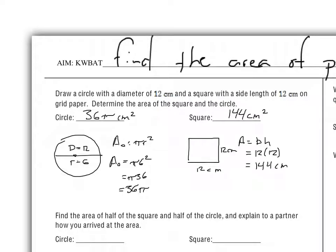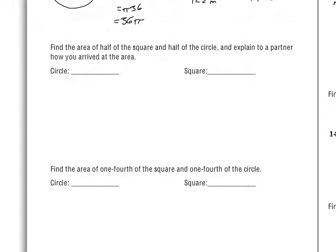As a quick check-in, you should have your sketches drawn. The area of your circle is π times radius squared — the radius is 6 if the diameter is 12, giving 36π. For the square, base times height is 12 times 12, so we get 144 centimeters squared.